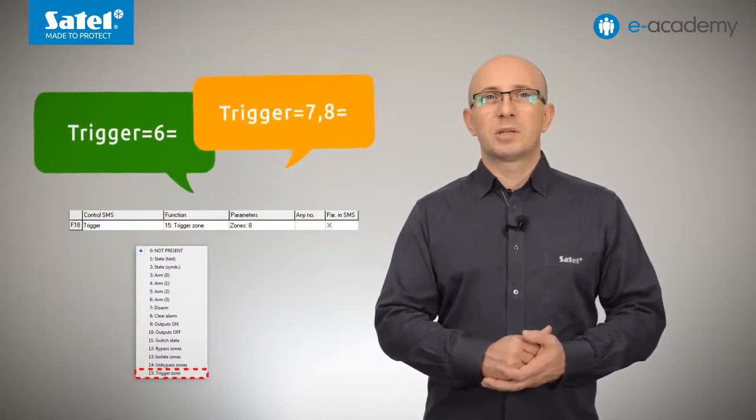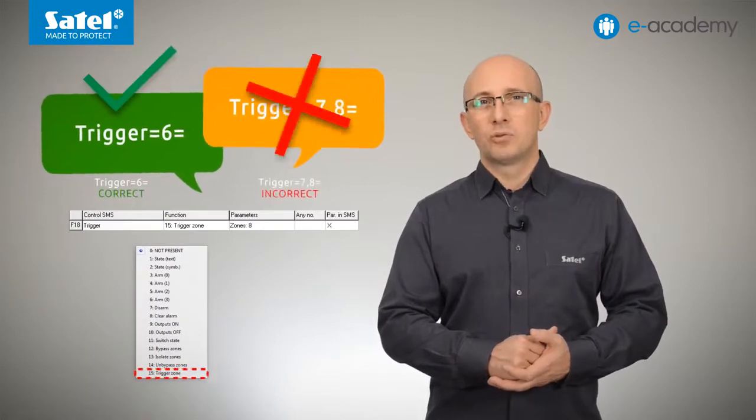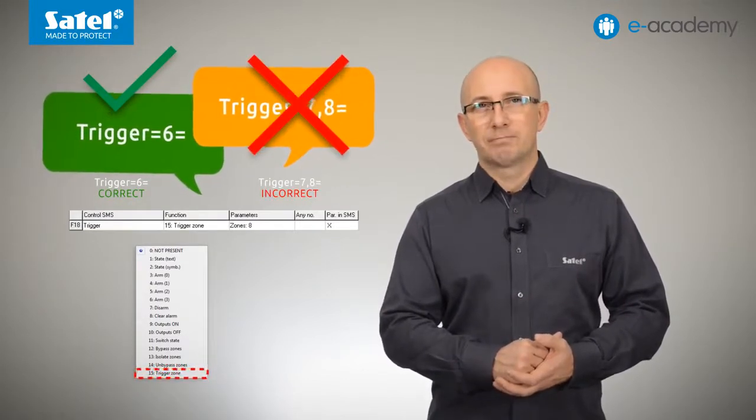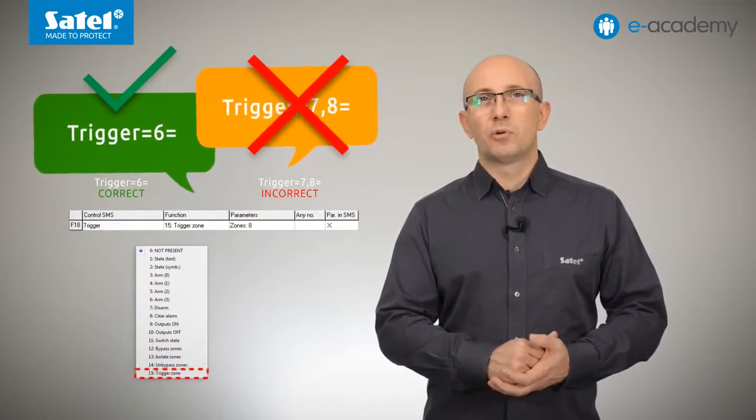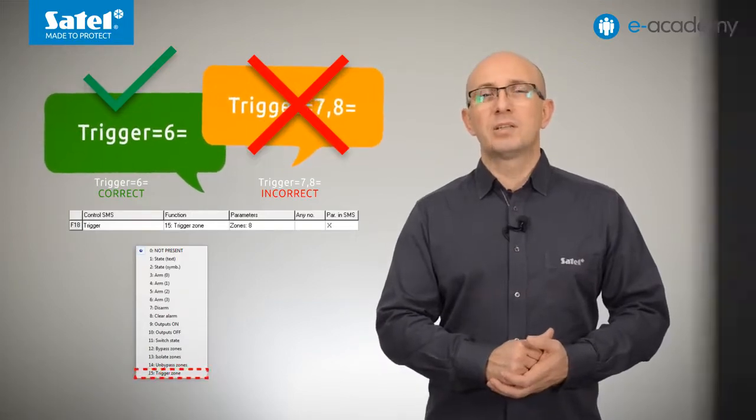Also, when a parameter command is being sent, it can only contain one zone number for violation. If you enter the numbers of two or more zones, such a command will not be executed.